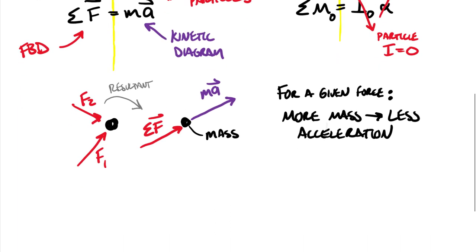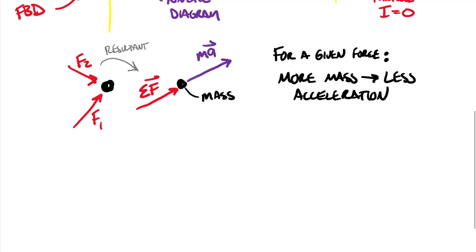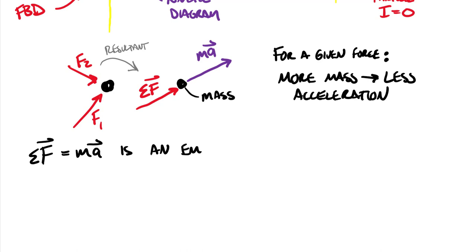If we think about the relationship F = ma, it turns out that F = ma was never derived. Many equations are derived, but the sum of forces as a vector equals mass times acceleration as a vector is an empirical equation — meaning it came from observation and experiments. They actually observed that if you applied a force to a particle with a given mass, you ended up with an acceleration.